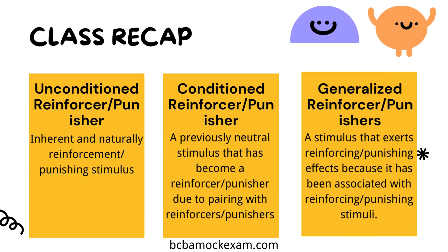To sum up: an unconditioned reinforcer refers to inherent and naturally occurring reinforcement. An unconditioned punisher is an inherent and naturally punishing stimulus. A conditioned reinforcer refers to previously neutral stimuli that have become a reinforcer through association with a reinforcer. A conditioned punisher refers to previously neutral stimuli that have become a punisher due to pairing with punishers. A generalized reinforcer is a stimulus that, through repeated pairings with other reinforcers under various situations, can reinforce many behaviors. A generalized punisher is a stimulus that exerts a punishing effect because it has been associated with multiple punishing stimuli.